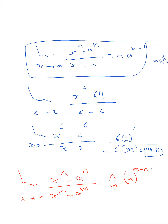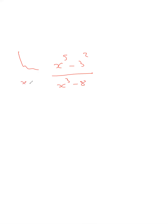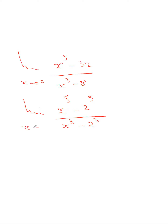Here is another example: limit of x^5 minus 32 over x^3 minus 8, when x tends to 2. We can recognize the powers — 32 is 2^5 in the numerator and 8 is 2^3 in the denominator. So the exercise becomes: limit of x^5 minus 2^5 over x^3 minus 2^3, as x tends to 2.